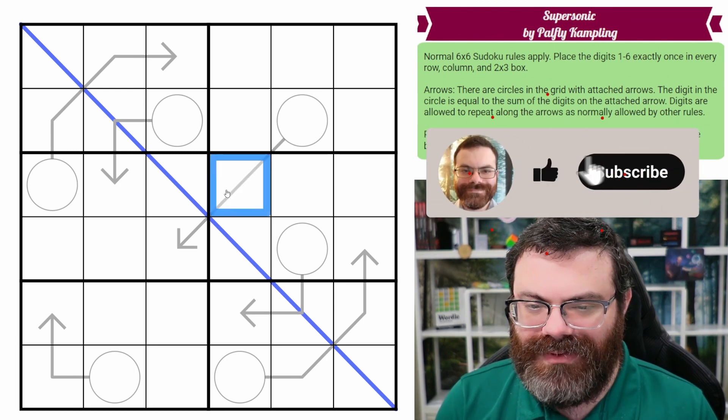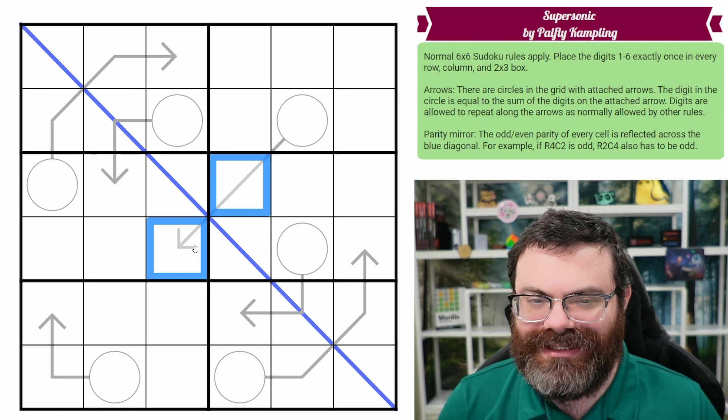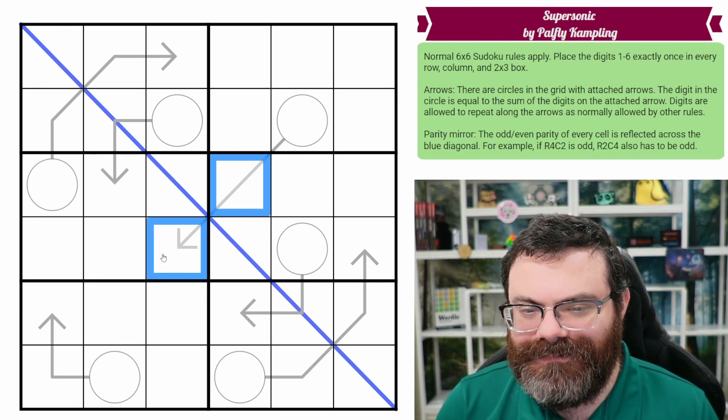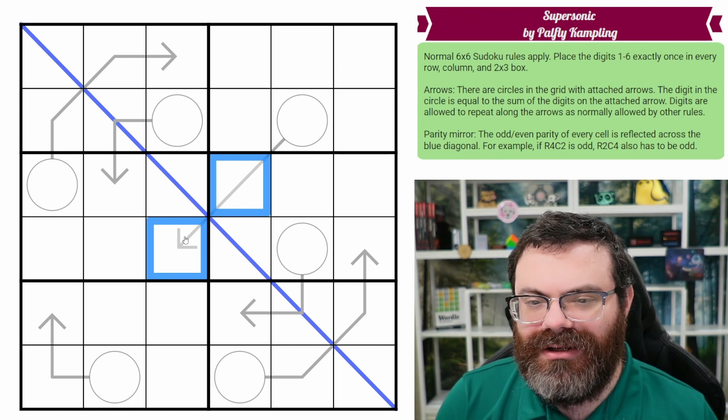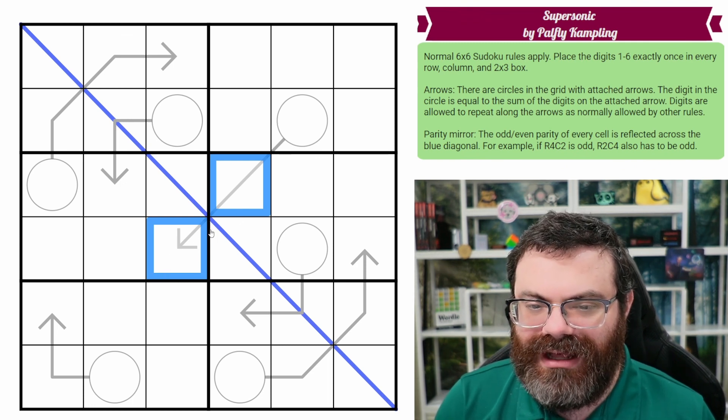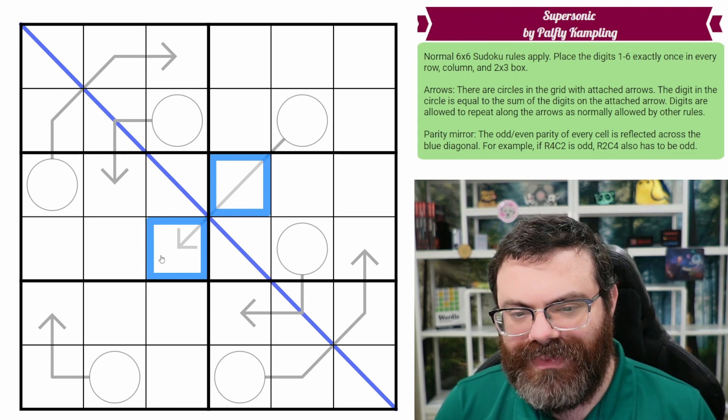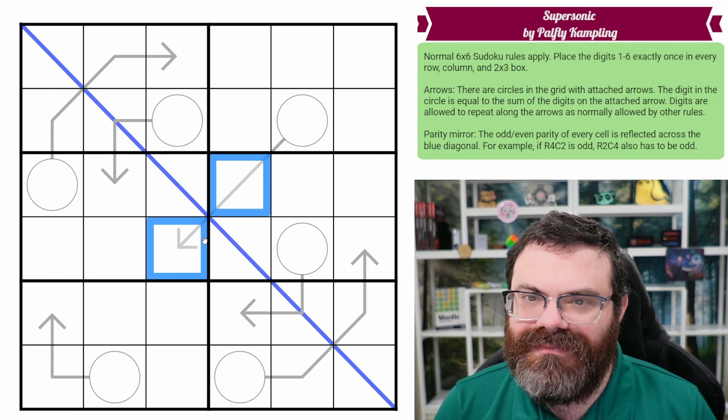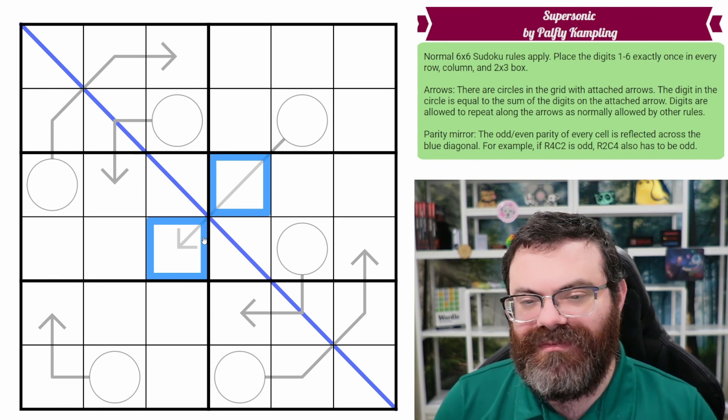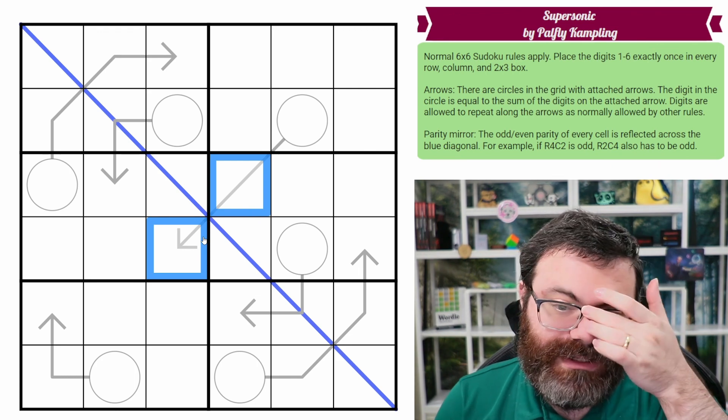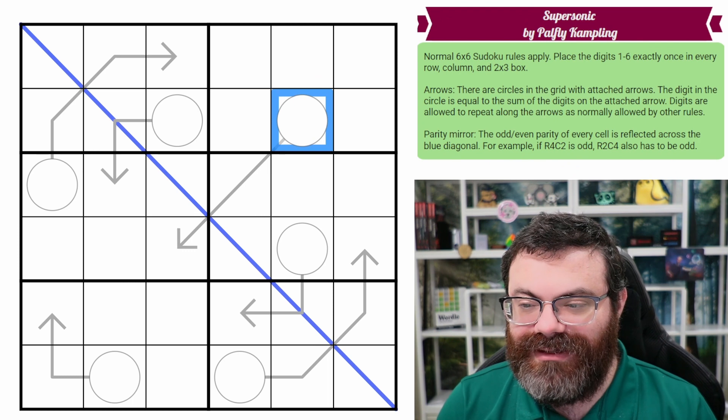Actually, my example kind of revealed something that I hadn't realized until I did the example. But these two digits are the same parity, but they're either both even or both odd. Regardless of whether they're both even or both odd, they will add to an even number because even plus even is even. Odd plus odd is also even.